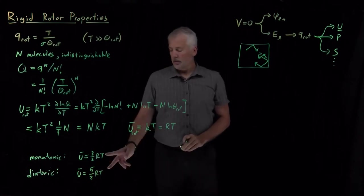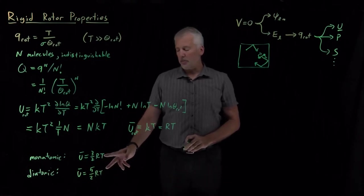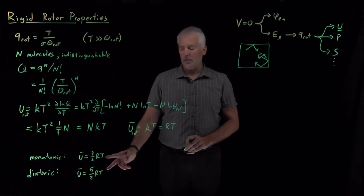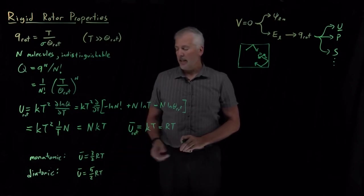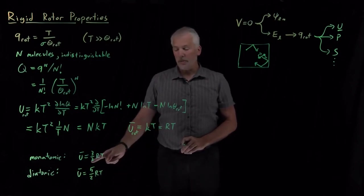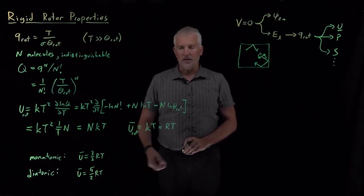So now, finally, these expressions are beginning to agree with what you may have learned in a previous chemistry course, like general chemistry. The energy of a monatomic ideal gas is three halves RT, diatomic ideal gas is five halves RT.